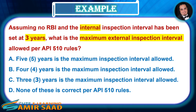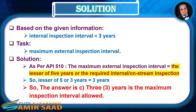Example: Assuming no RBI and the internal inspection interval has been set at 3 years, what is the maximum external inspection interval allowed per API 510 rules? Solution: as per API 510, the maximum external inspection interval equals the lesser of 5 years or the required internal on-stream inspection. So: lesser of 5 or 3 years equals 3 years. The answer is C — 3 years as the maximum inspection interval allowed.